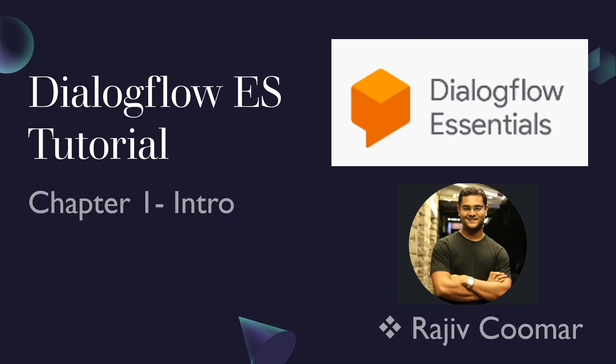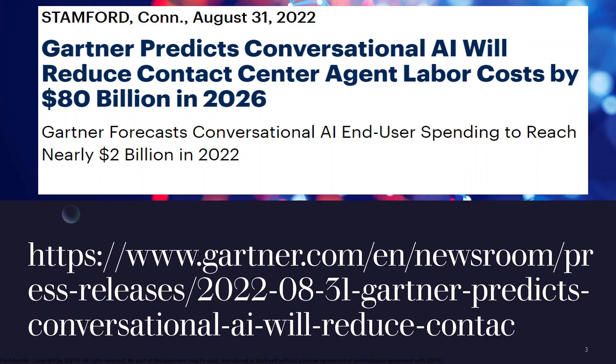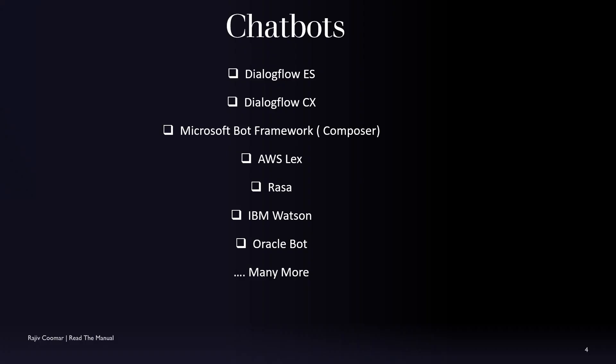In today's video we are going to start a new tutorial on chatbots, and one of the frameworks we are using is Dialogflow ES. This is a Gartner article published in August which indicates that all major companies and industries across verticals are pushing towards conversational AI. There is a big cost saving factor involved — around 80 billion dollars that will be saved by industries if they move to conversational AI. The link is in the comment section.